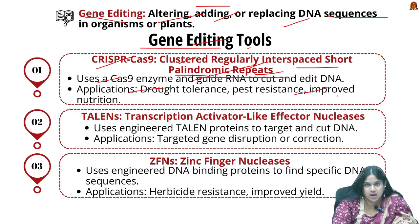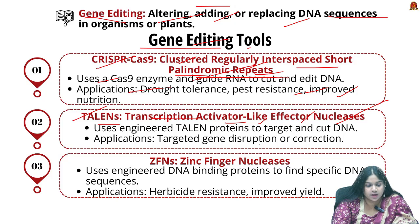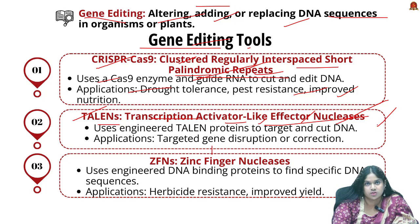Next is TALENs — Transcription Activator-Like Effector Nucleases. This tool uses an engineered protein to target and cut DNA sequences. It is used in crops for targeted gene disruption or correction, such as modifying disease resistance genes.